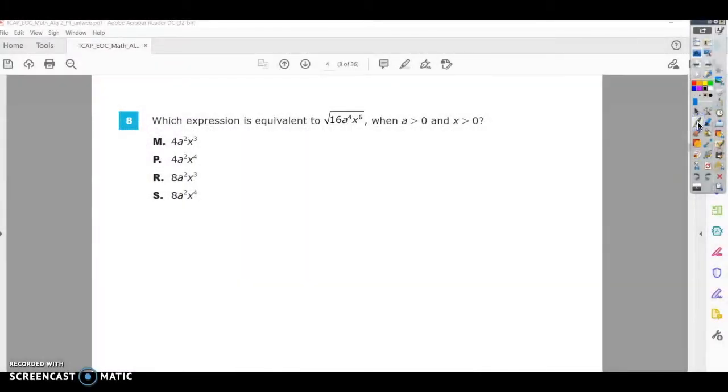Okay, so this is number 8 on the Algebra 2 practice test. It says which expression is equivalent to the square root of 16, a to the 4th, x to the 6th, when a is greater than 0 and x is greater than 0.